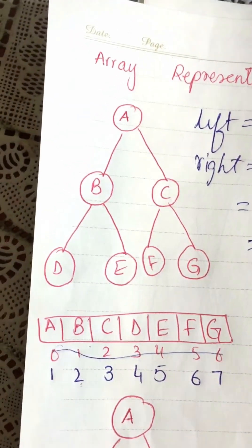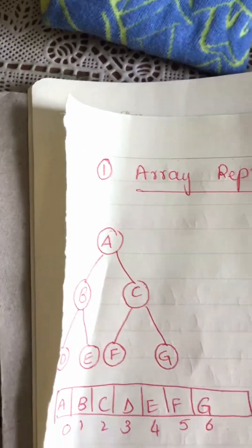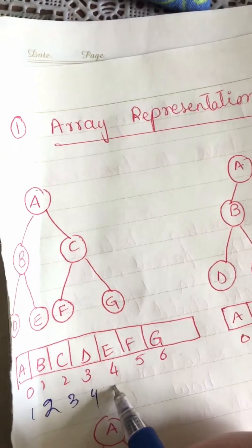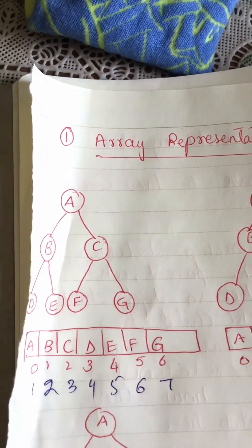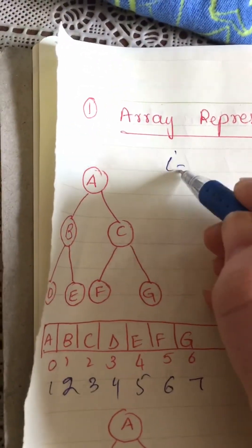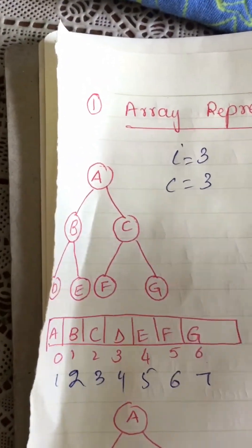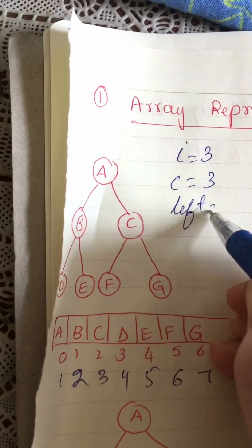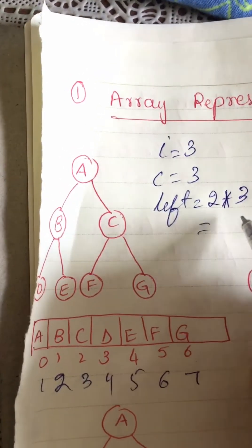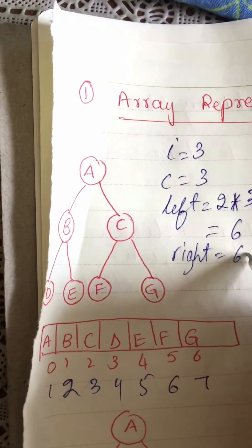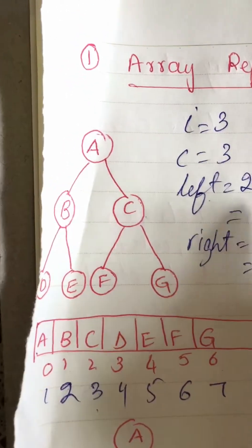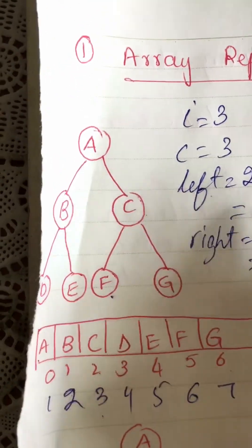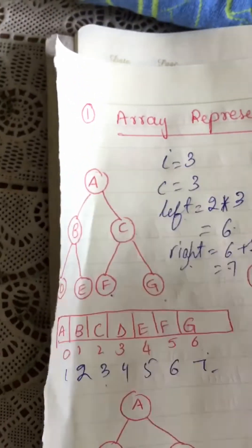Let us verify with this tree: nodes A, B, C, D, E, F, G at indexes 1 through 7. Let's check node C which is at index 3, so i=3. Its left child will be at 2×3 = 6, and its right child will be at 6+1 = 7. So C is at 3, its left child is at index 6 which is F — check it, it is F — and the right child is at index 7 which is G.